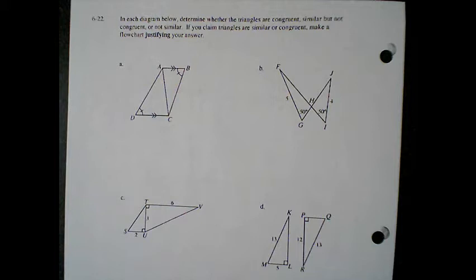Question 22: In each diagram below, determine whether the triangles are congruent, similar but not congruent, or not similar. If you claim the triangles are similar or congruent, make a flowchart justifying your answer.